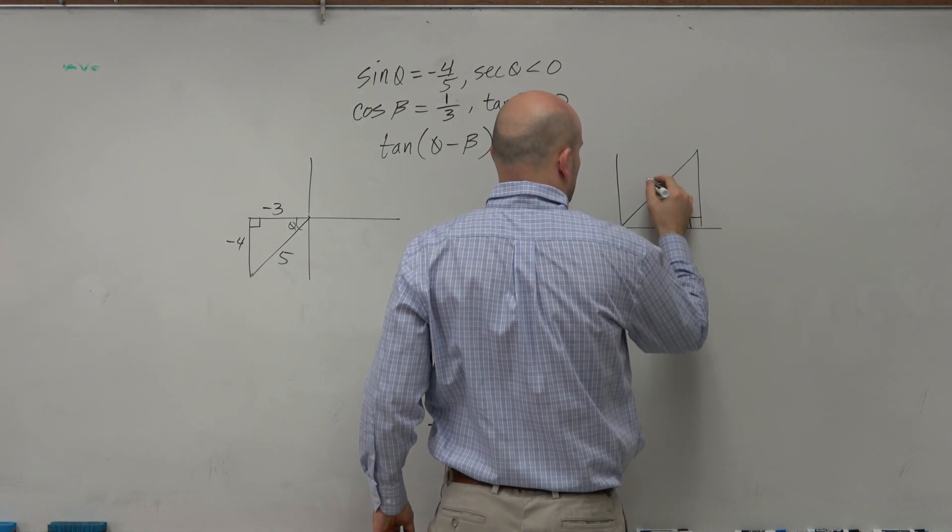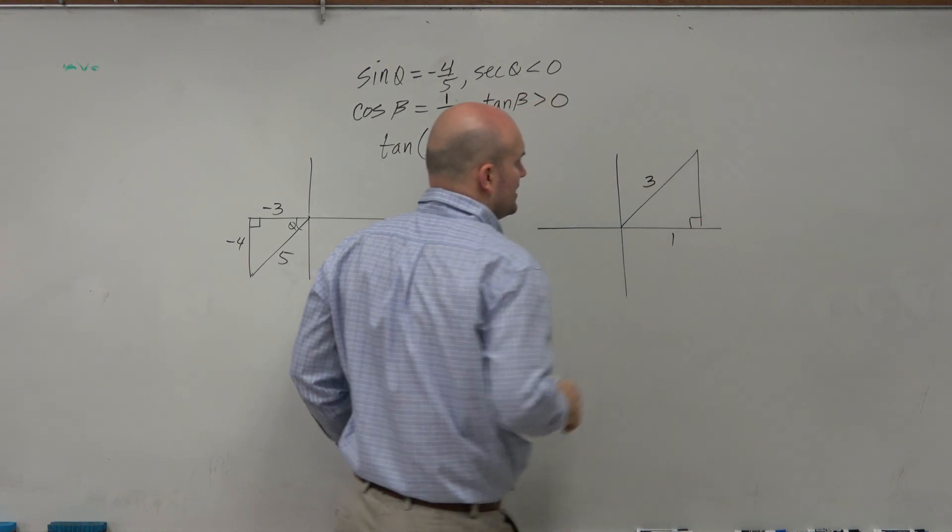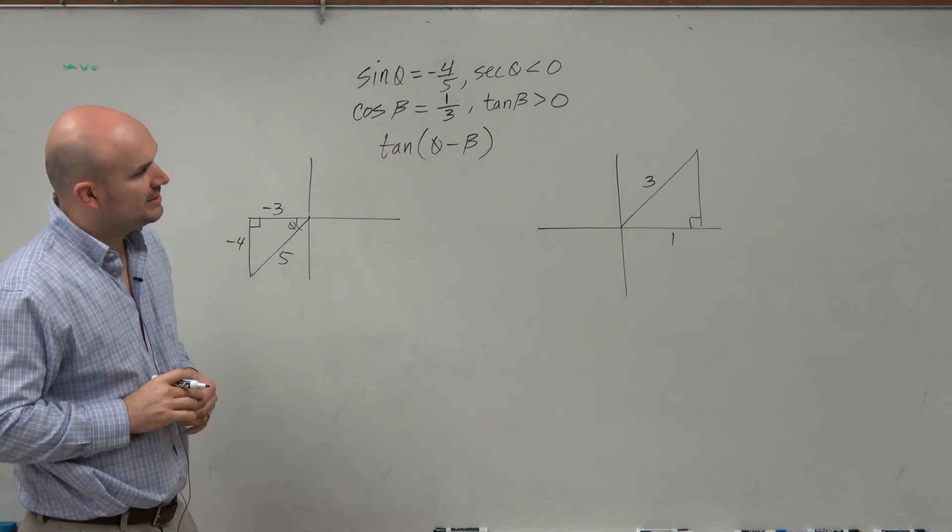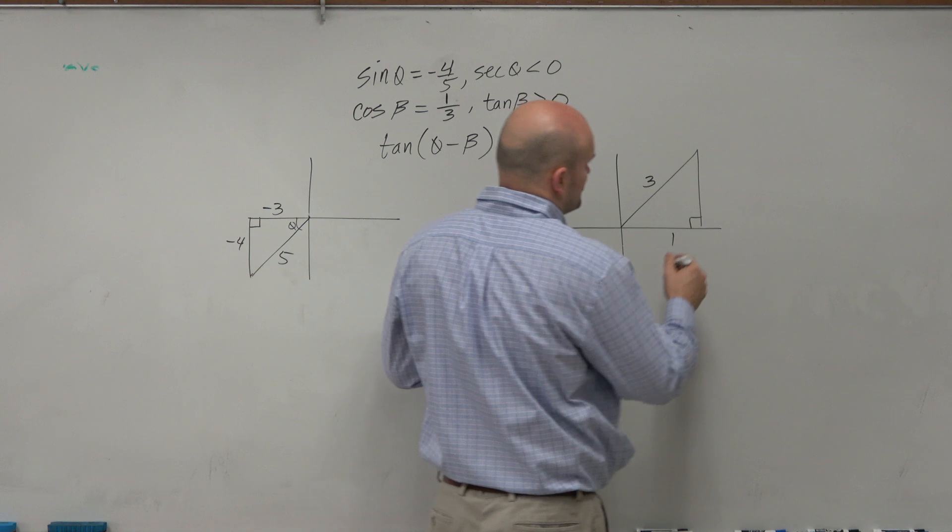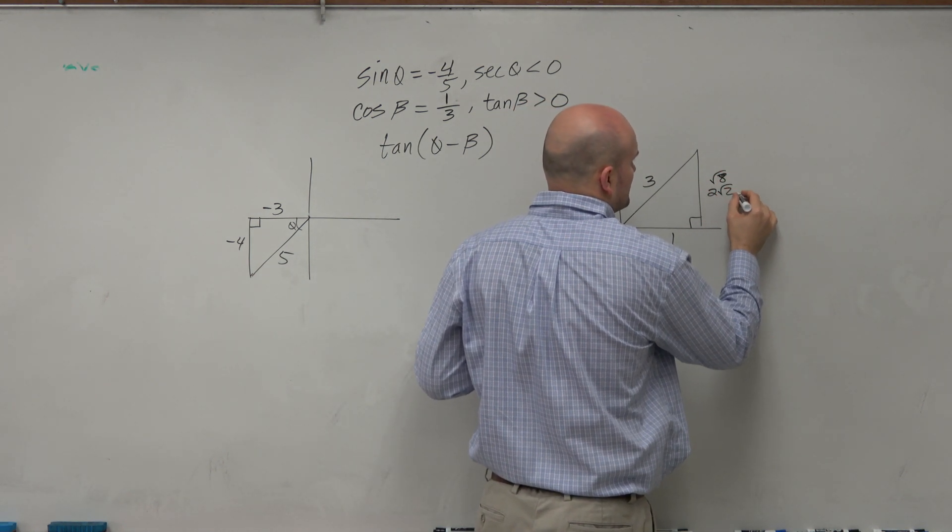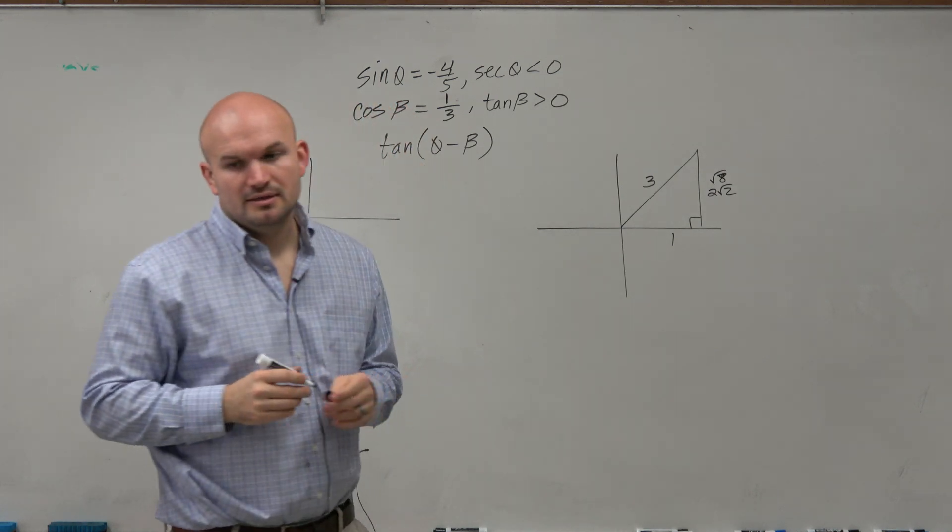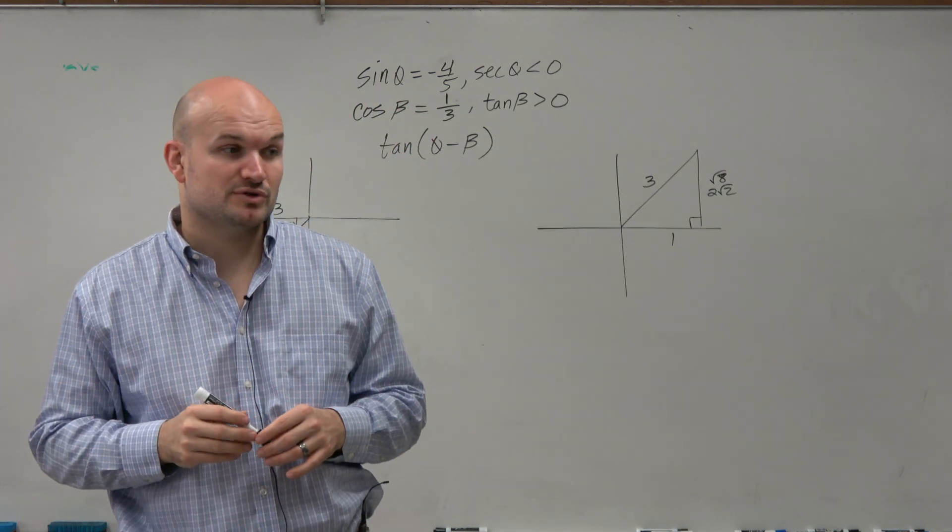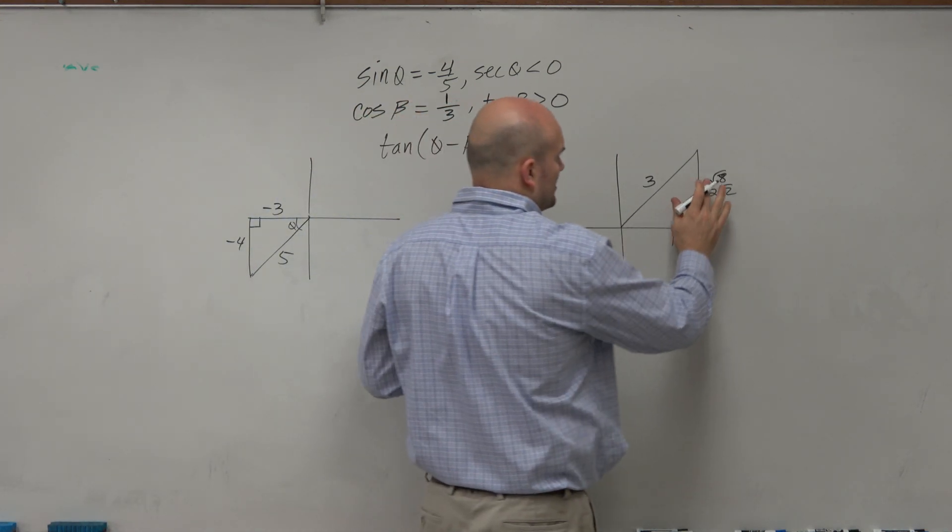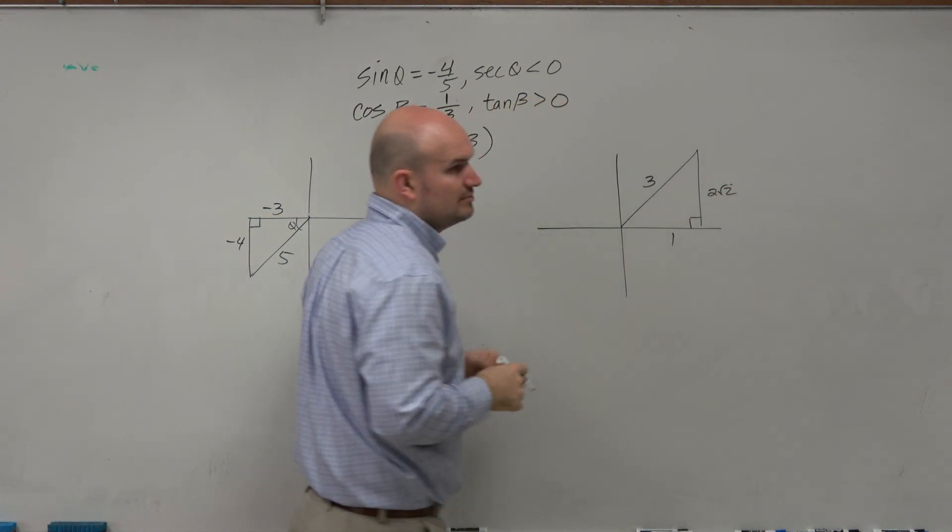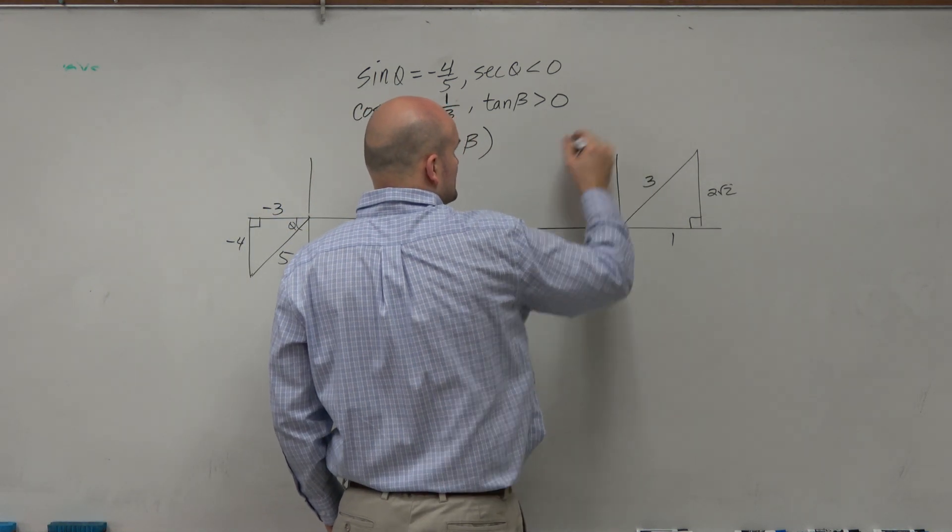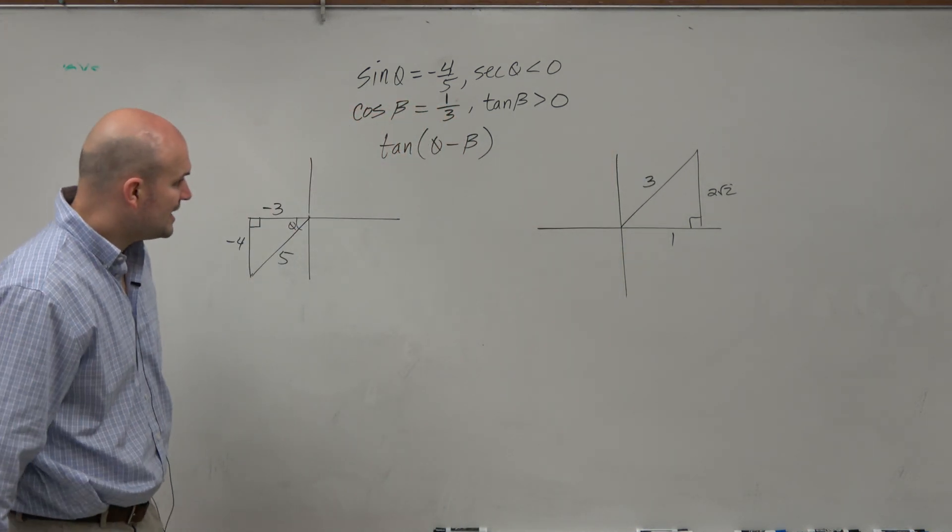So this is 1, that's 3, and there I can use the Pythagorean theorem to go ahead and figure this out, which would be square root of 8, which is the same thing as 2 square root of 2. Not 2.8284271, which would be the decimal approximation, which we don't want to use, right? We'd want to use the square root of 8, or 2 square root of 2. I always want to use the simplified version.